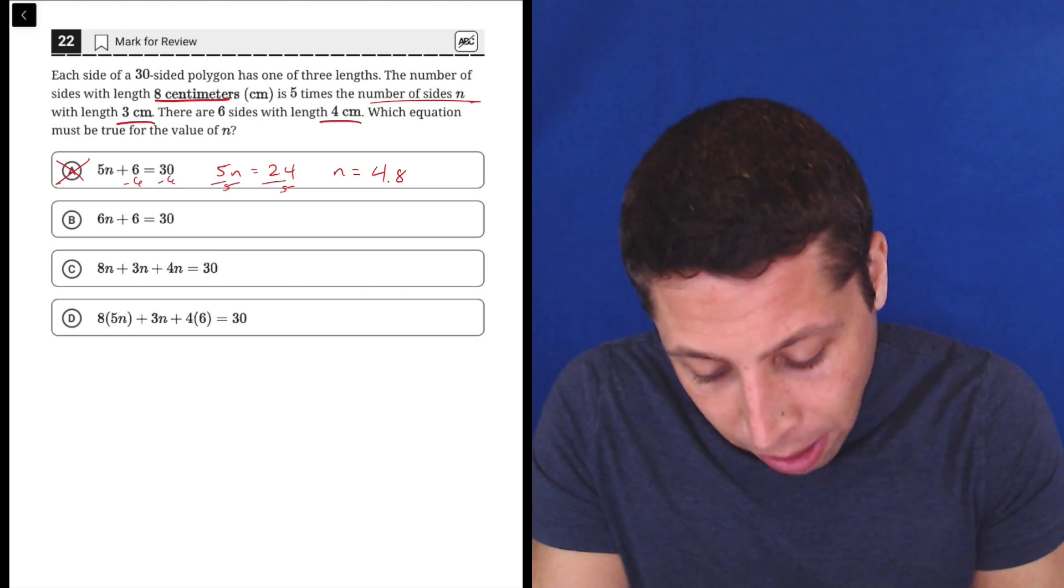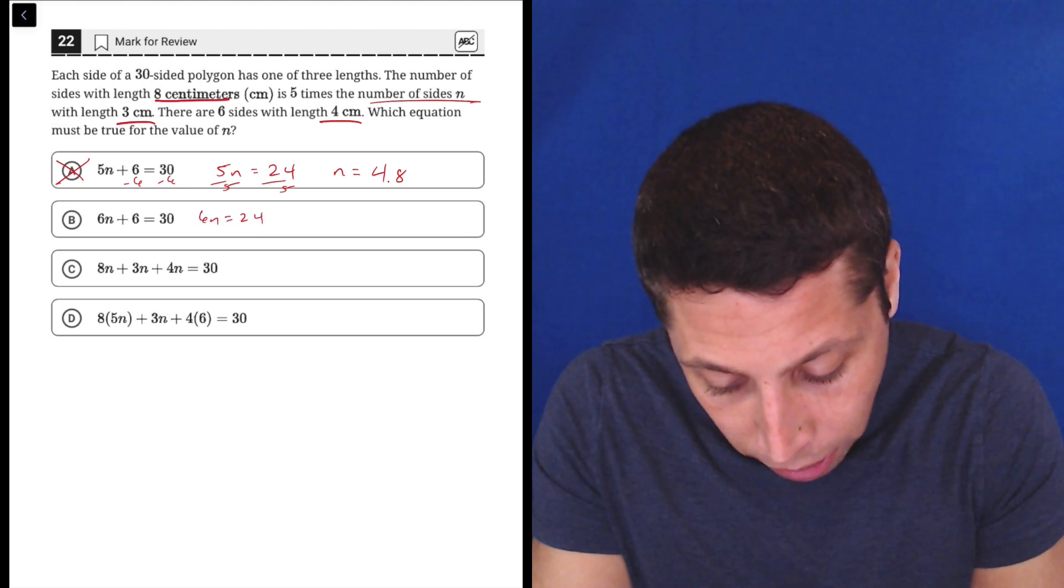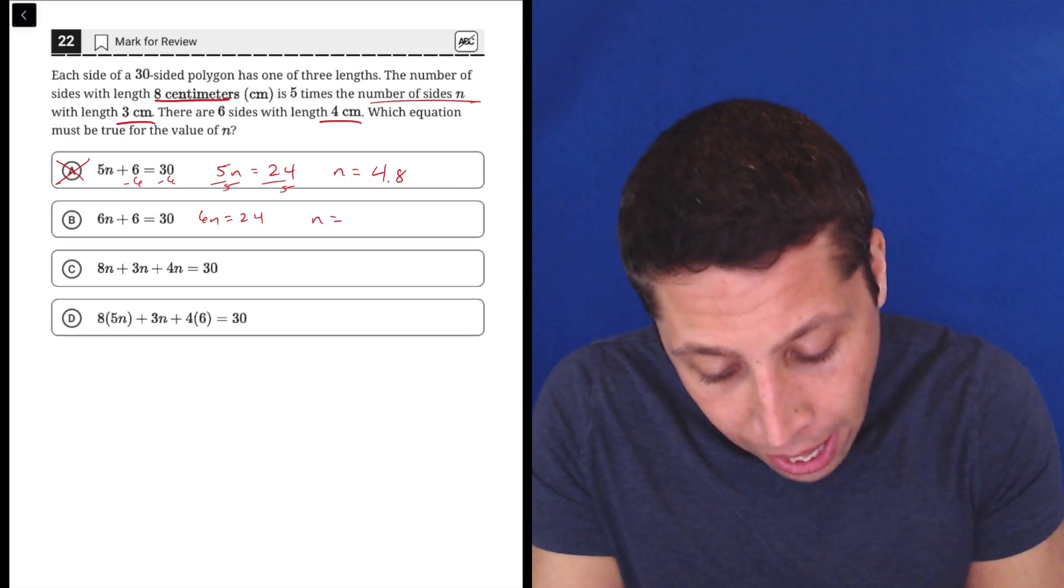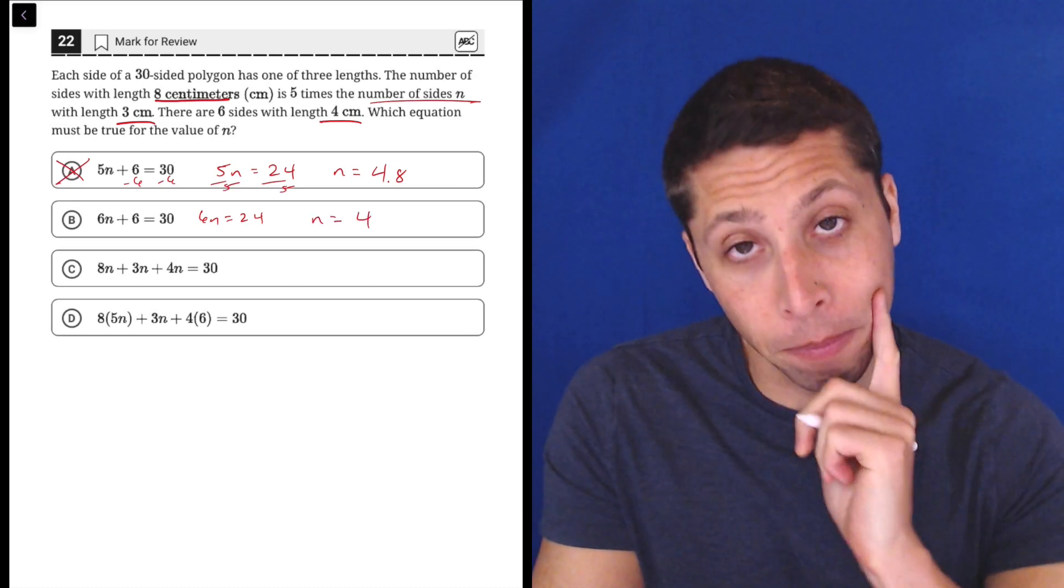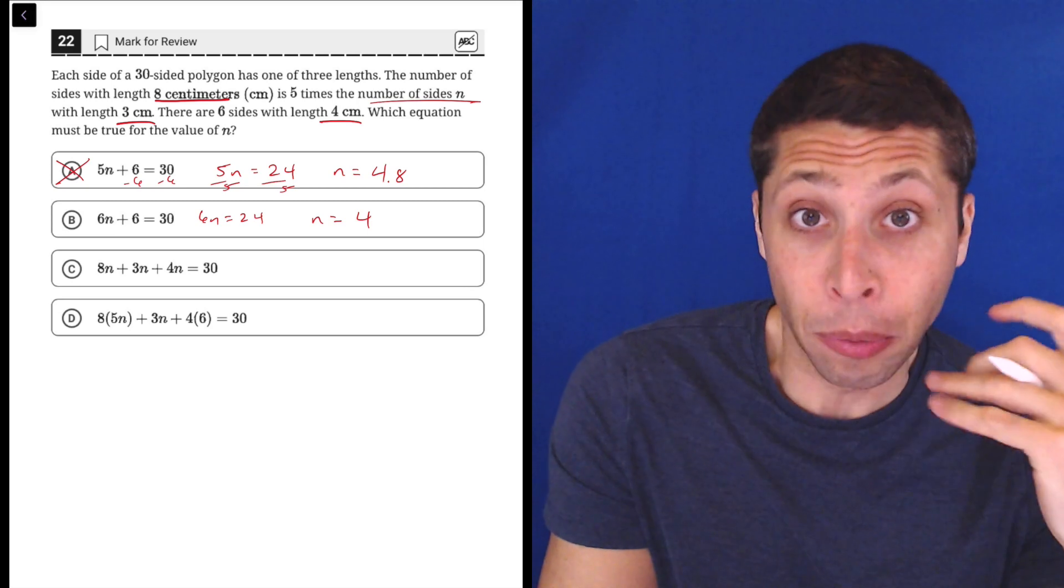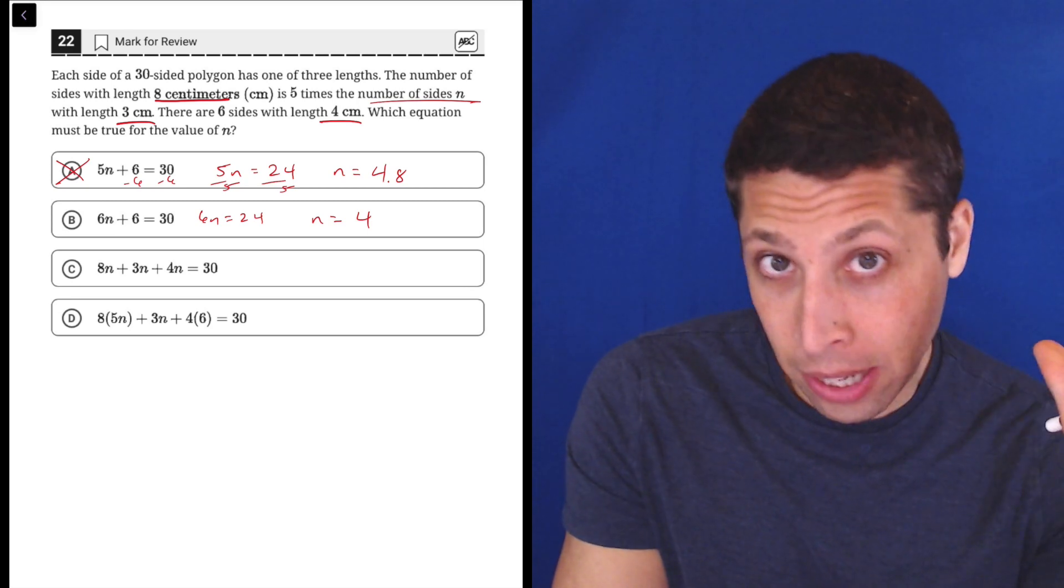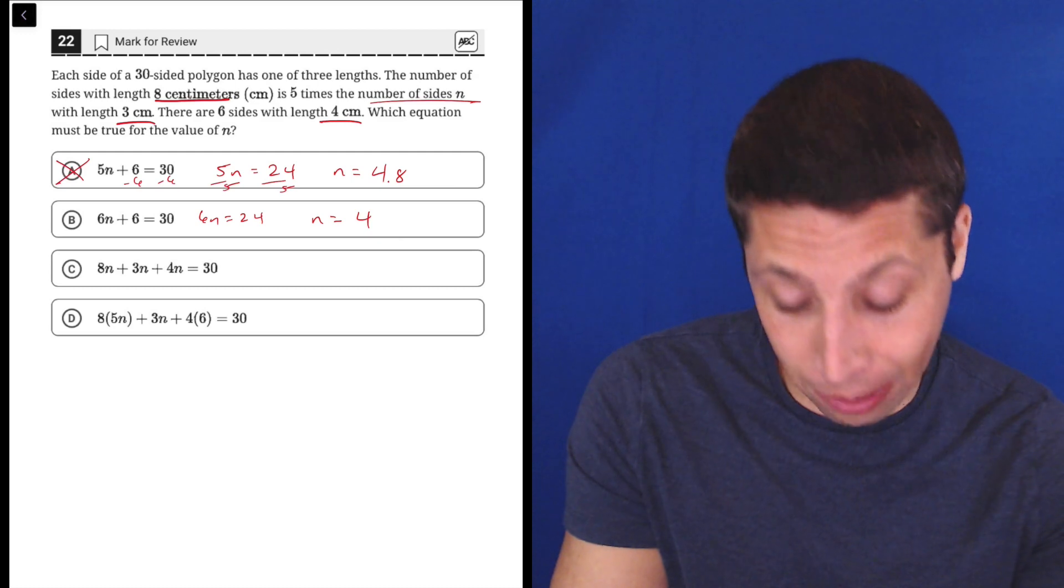Now if we do the same thing to b, that would be 6n is equal to 24. So now n is equal to 4. Okay, that's at least a reasonable number. So maybe we just kind of move on and see if the other ones are going to give us reasonable numbers as well.